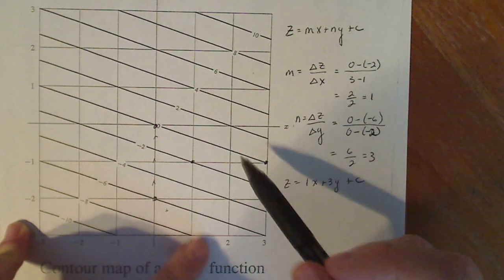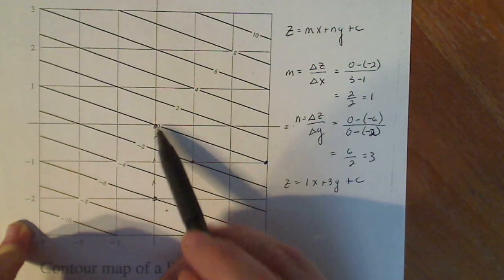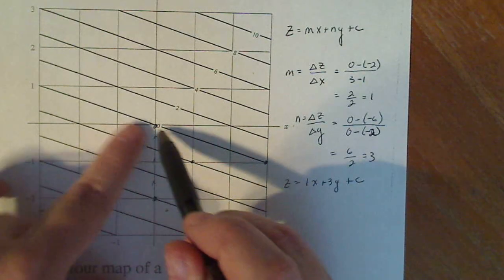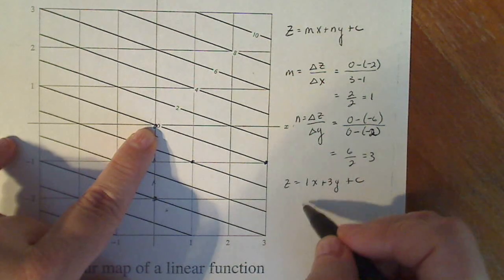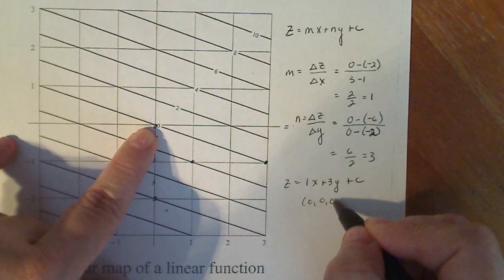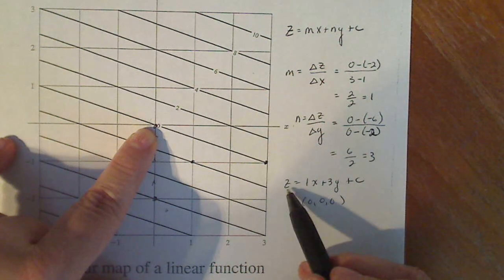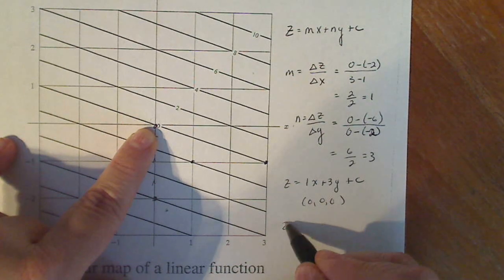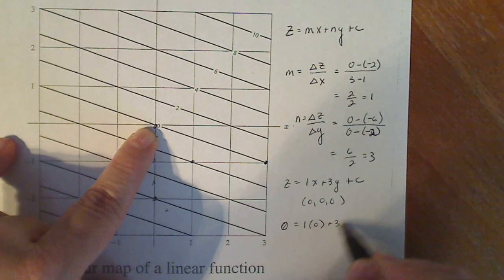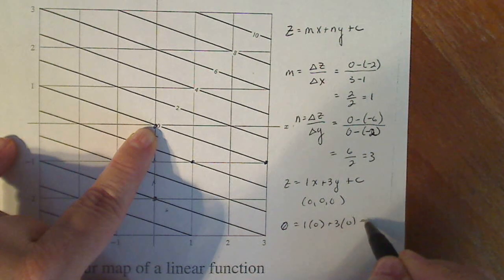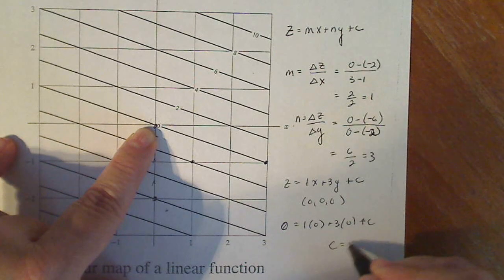Now I see an ordered pair here right in the middle. This is a nice one. So X is zero, Y is zero and Z is zero. So the ordered triple zero zero zero is on the graph. I can plug it in. Zero for Z, zero for X, zero for Y, and I solve for C. And C turns out to be zero.